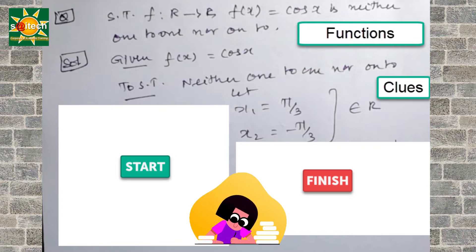So we need to show that this f of x equal to cos x is neither one-to-one nor onto. This is a very important question frequently asked in the topic relations and functions in class 12.